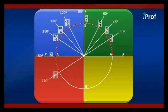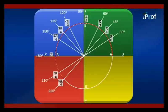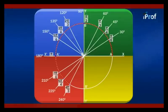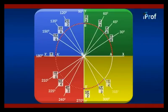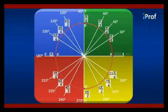Moving further, at 210 degrees this angle will be equal to 7π/6. Similarly, at 225 degrees it will be equal to π + π/4, that is 5π/4 radians. At 240 degrees it will be equal to π + π/3, that is 4π/3 radians. At 270 degrees it will be equal to 3π/2. We can similarly find the angles at 300, 315, and 330 degrees. At the end, back at A, it will be equal to 360 degrees, which equals 2π radians.